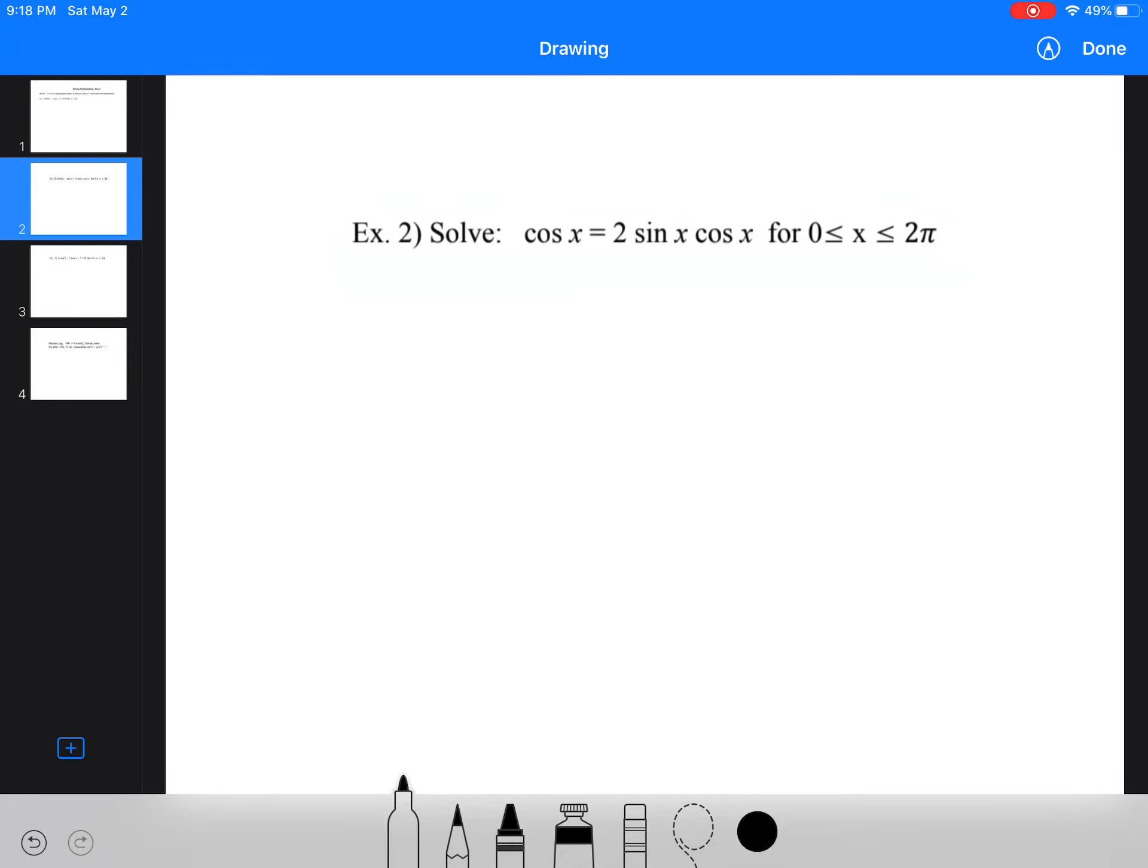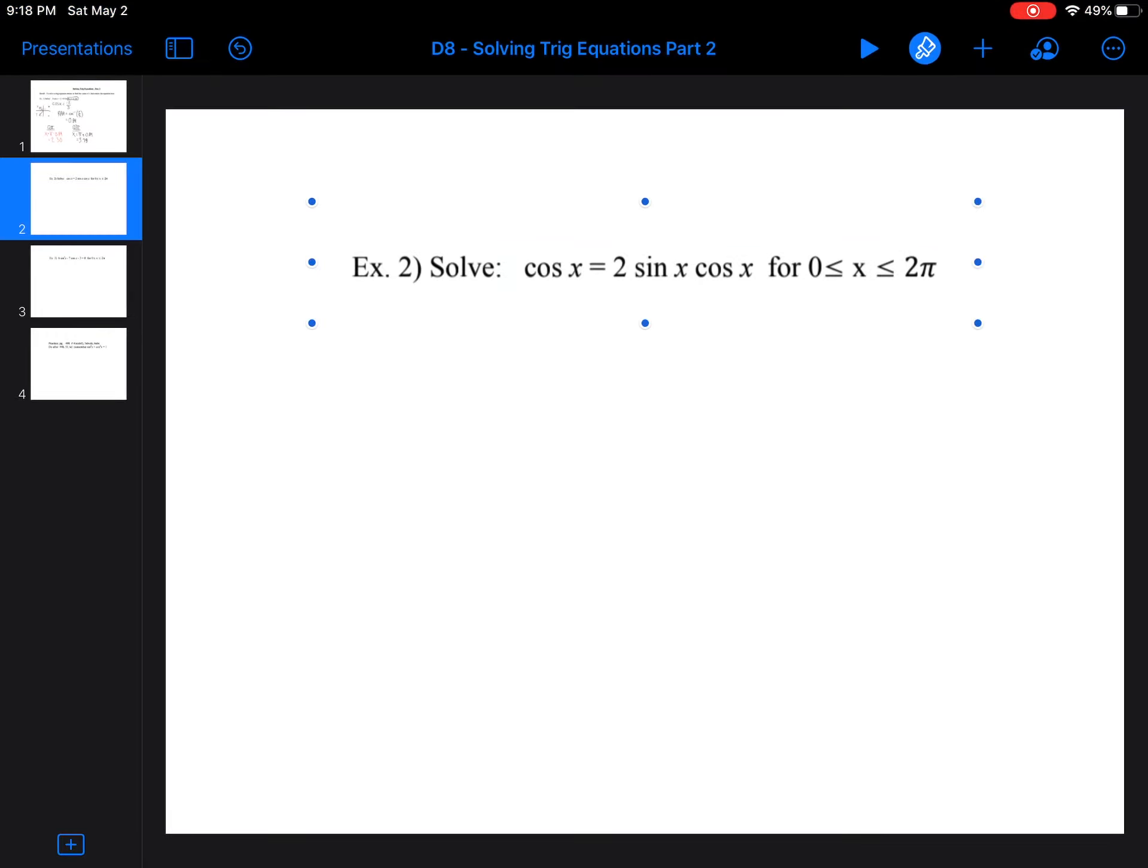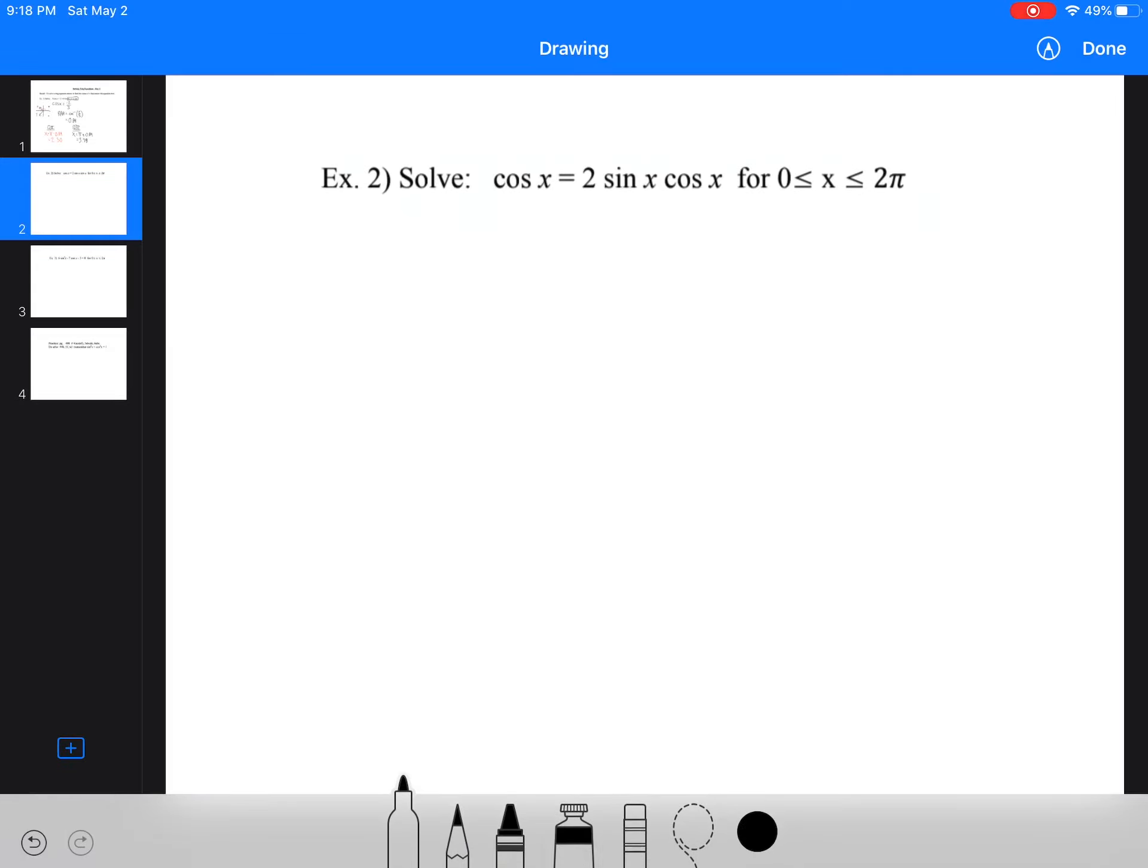Let's try the second question. So if we look at the second question, again, we're in radians, this is a question that gets a lot of people. So first thing we need to do is we need to put everything on one side. We can't just divide out those cosas because we end up losing some solutions, and I'll show you what I mean.